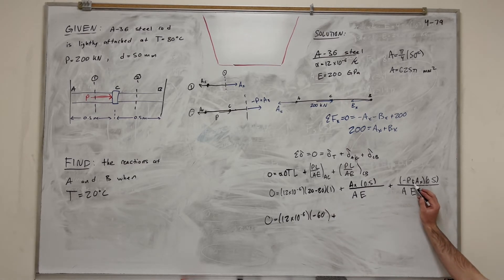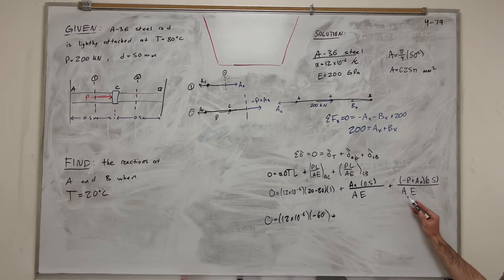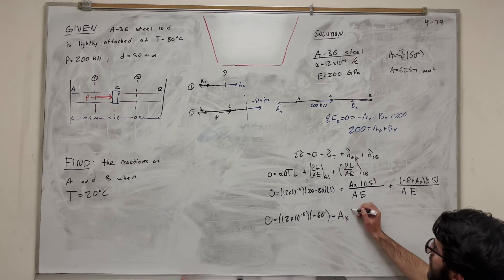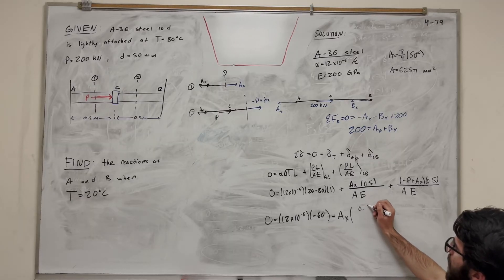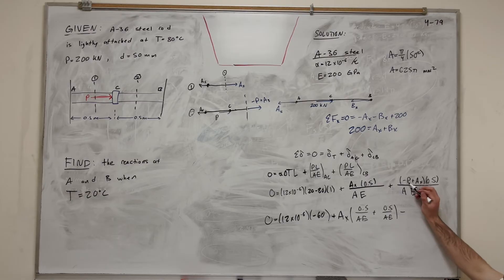So now we're going to break up this fraction. It's going to be the negative P plus A_X. We're going to basically split those into two. So we're going to think that this A_X and this A_X are going to come together. So let's bring out an A_X. And this is going to become 0.5 over AE. Plus this one, 0.5 over AE. Then what we're going to be left with is this negative P. So we're going to have the minus P, 0.5 over AE.